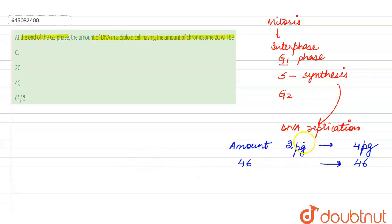Number of chromosomes do not double, but amount of DNA will double. So here we see that if the amount of DNA is 2c here, at the end of the G2 phase, which occurs after the S phase,